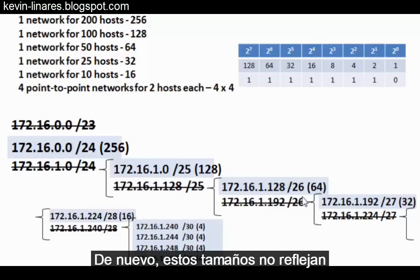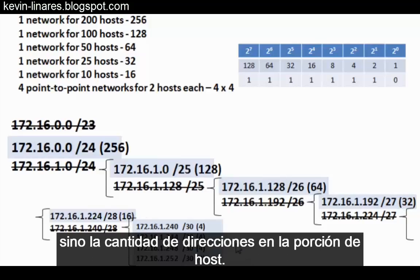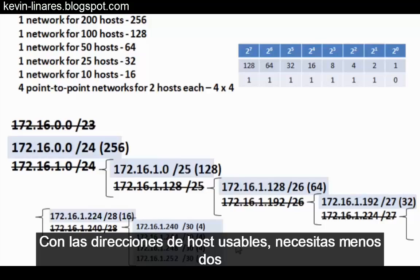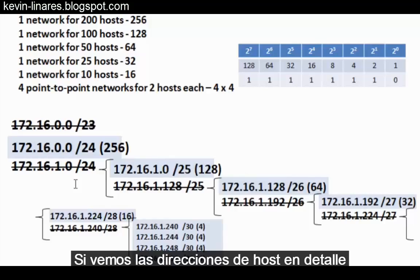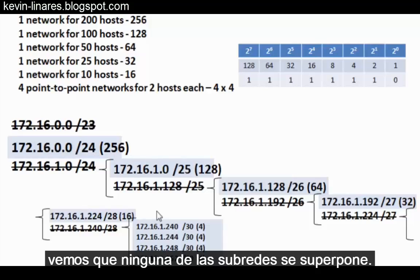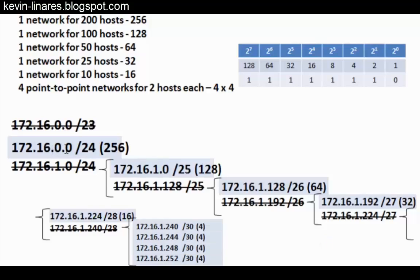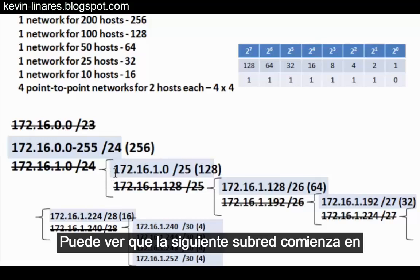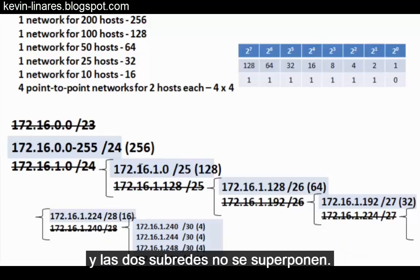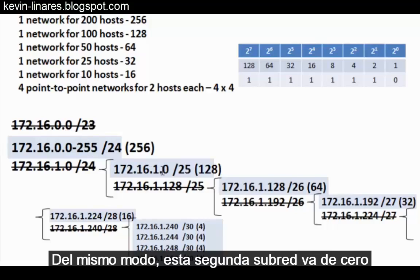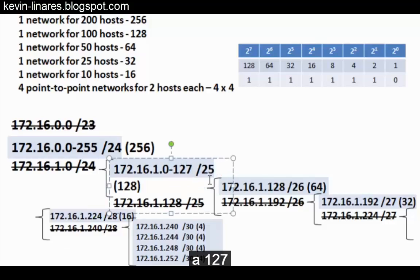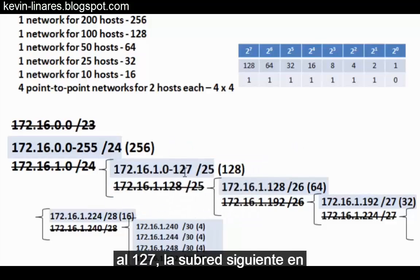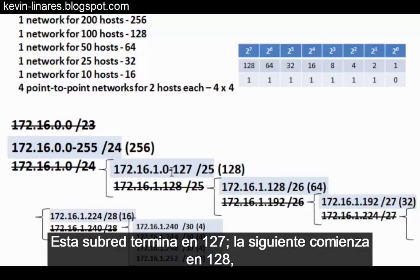Once again, these sizes do not reflect the usable hosts in each subnet, but the total number of addresses in the host portion. For usable host addresses, you subtract two from each subnet. If we examine the host addresses closely, we'll see that none of the subnets overlap. The 172.16.0.0/24 subnet goes from 0 all the way up to 255. The next subnet starts at 172.16.1.0, so the two subnets do not overlap. Similarly, the second subnet goes from 0 to 127, and the next subnet at 172.16.1.128/26 begins at 128 — no overlap.